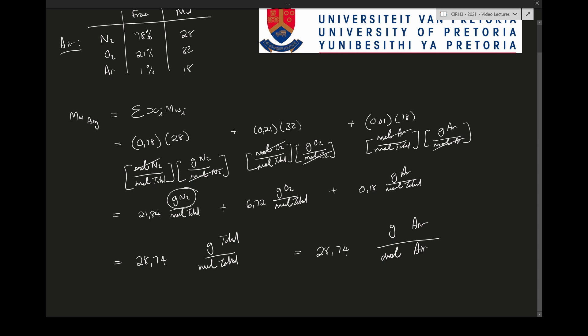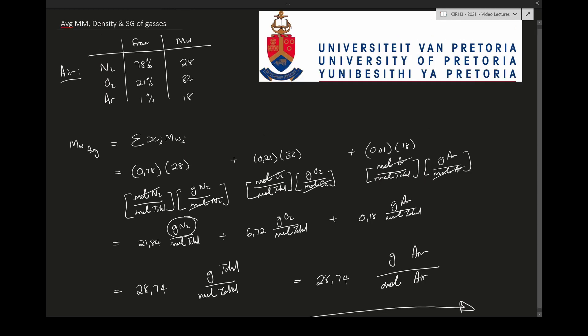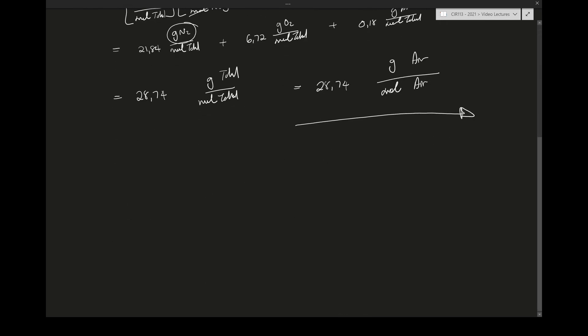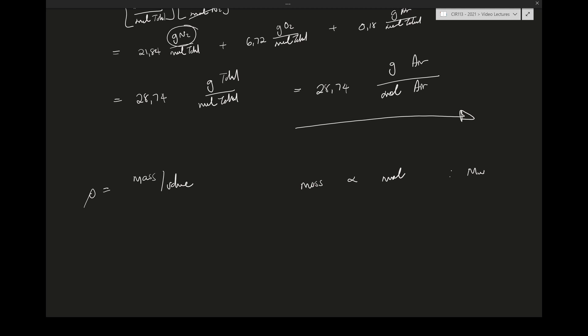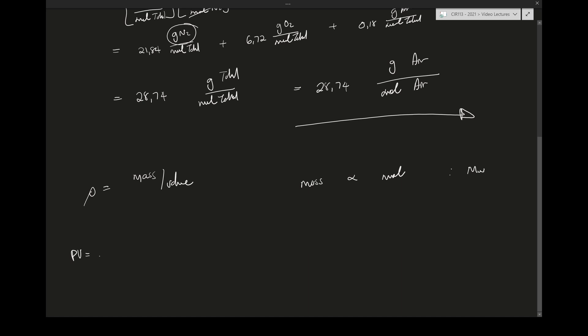The next topic we quickly want to talk about is density of gases. Now density of gases is interesting because we know that density is mass over volume, and we know that mass is related to the moles of a substrate via molecular weight. When we understand this and we remember the ideal gas law, then we have PV equals nRT.